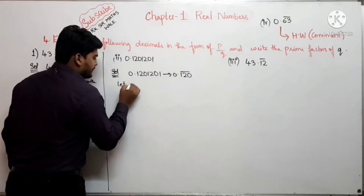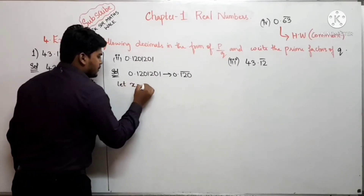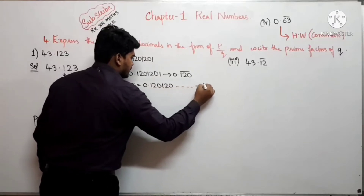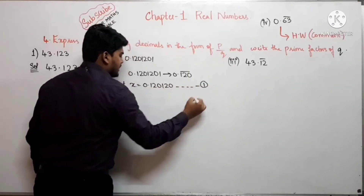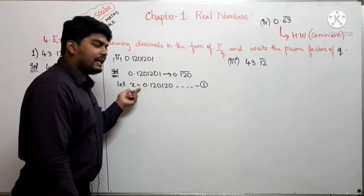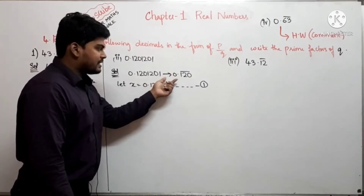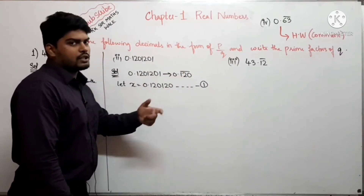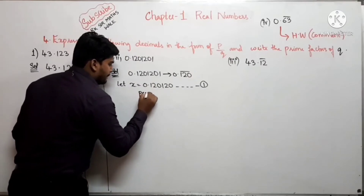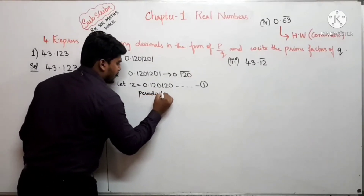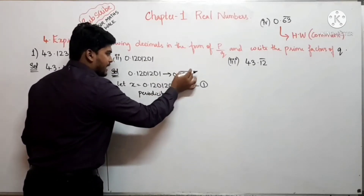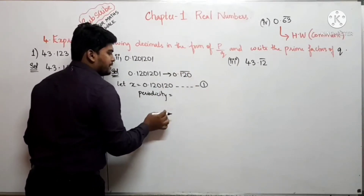Let x = 0.\(\overline{120}\), let this be equation number 1। जब कभी आपको bar वाला number मिलेगा, तो उसको x मान लेना है — यही process हमेशा इस्तेमाल करना है। Next step: periodicity find करना होगा। Periodicity मतलब जितने numbers के ऊपर bar है।